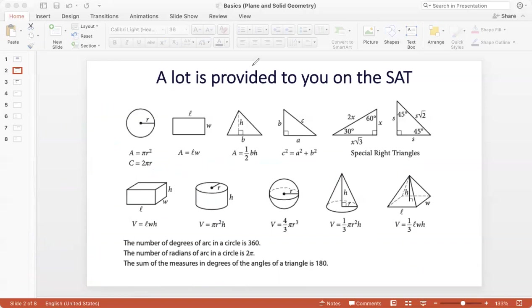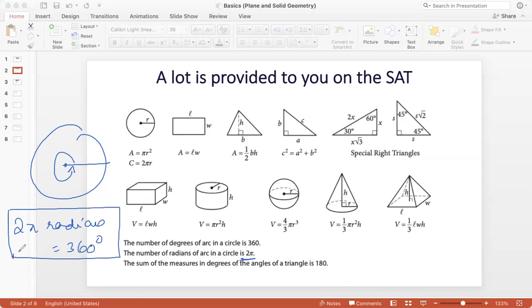The other thing that you need to remember, which is given is that the number of degrees of arc in a circle is 360. And we know that, that if you take a full circle, the angle is 360, and the number of radians of an arc in a circle is 2 pi. So that tells us that 2 pi radians is 360 degrees. And this is an important relationship that's tested on some questions, especially on the SAT. And then the sum of measures of angles in a triangle is 180. So that's something that we know.